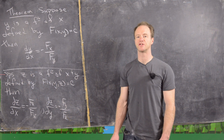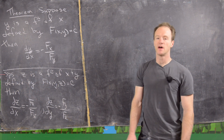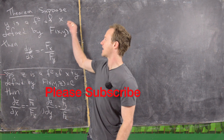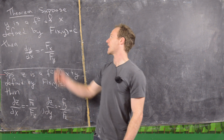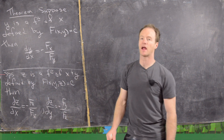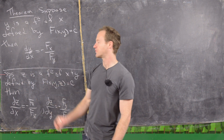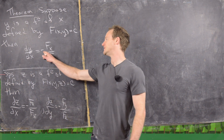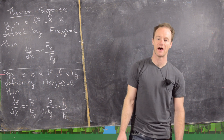Here we're going to look at an application of the chain rule for finding implicit derivatives. We'll prove two statements in one theorem. Suppose that y is a function of x defined implicitly by the formula F(x, y) = c, where c is a constant and F is some function of x and y. Then the derivative of y with respect to x — y prime — equals negative the partial of F with respect to x divided by the partial of F with respect to y.